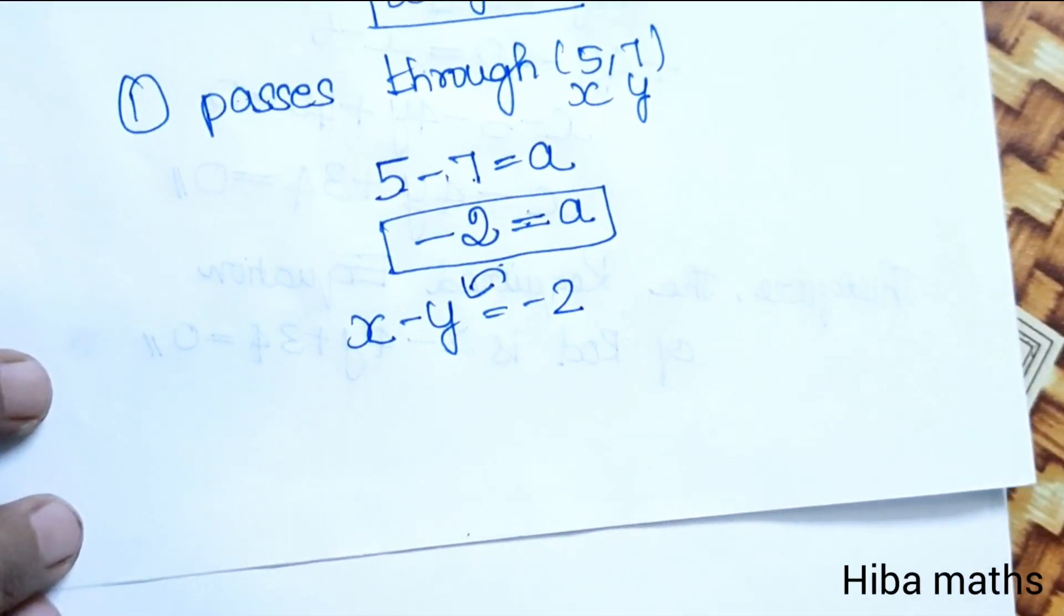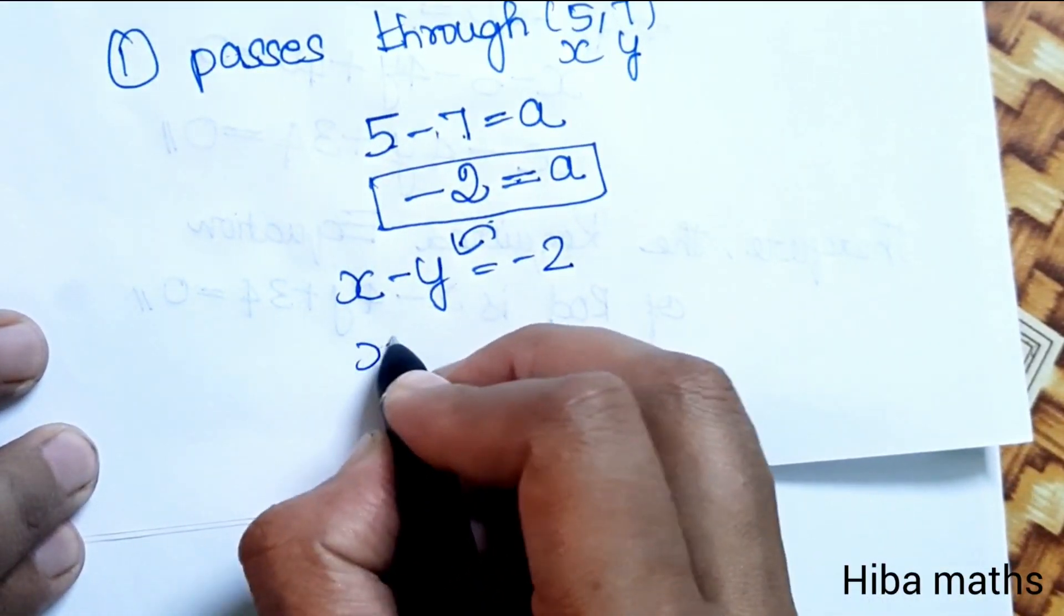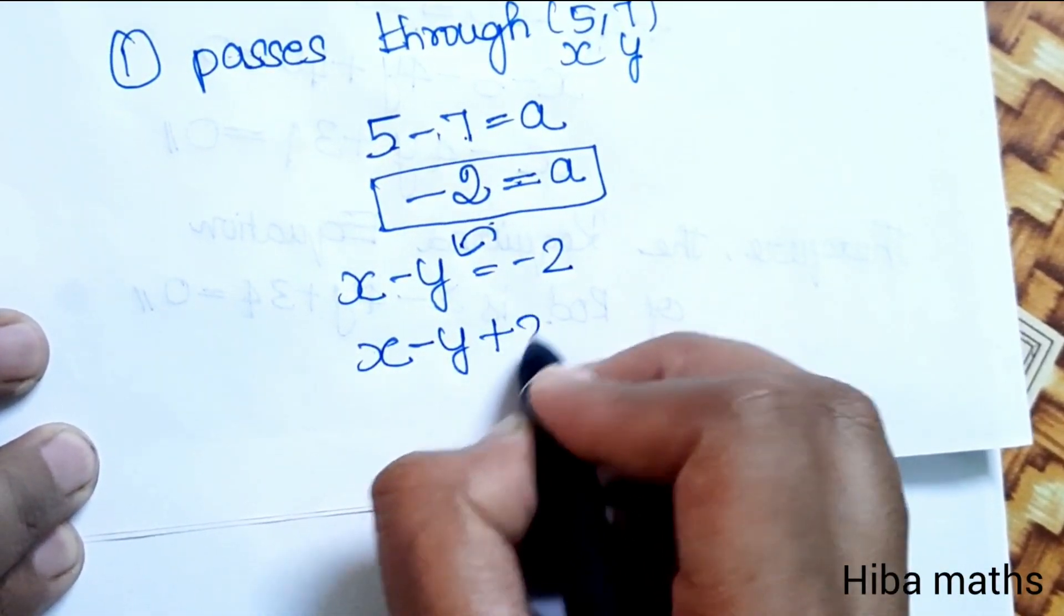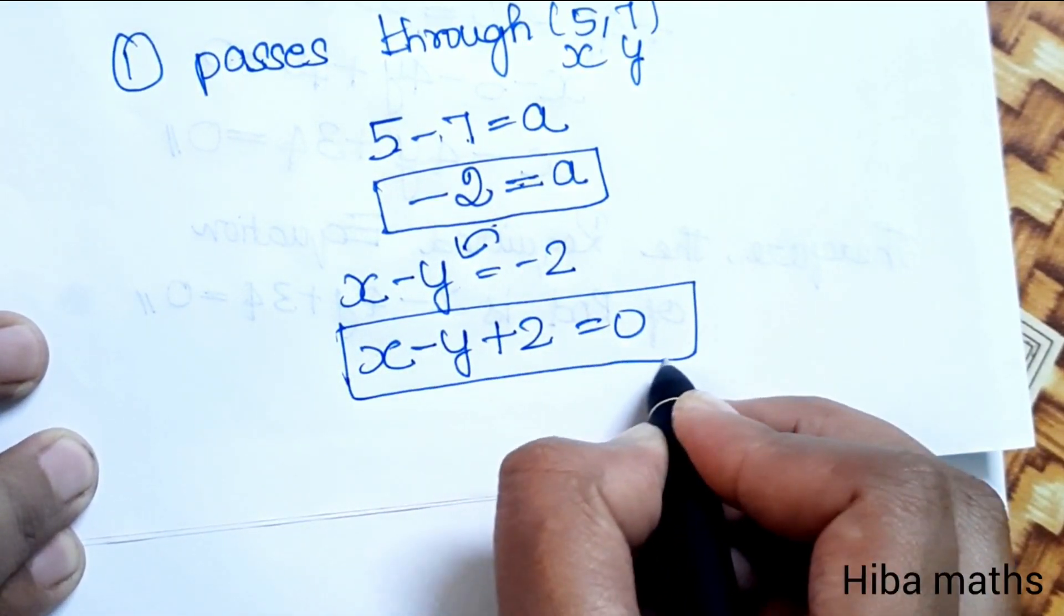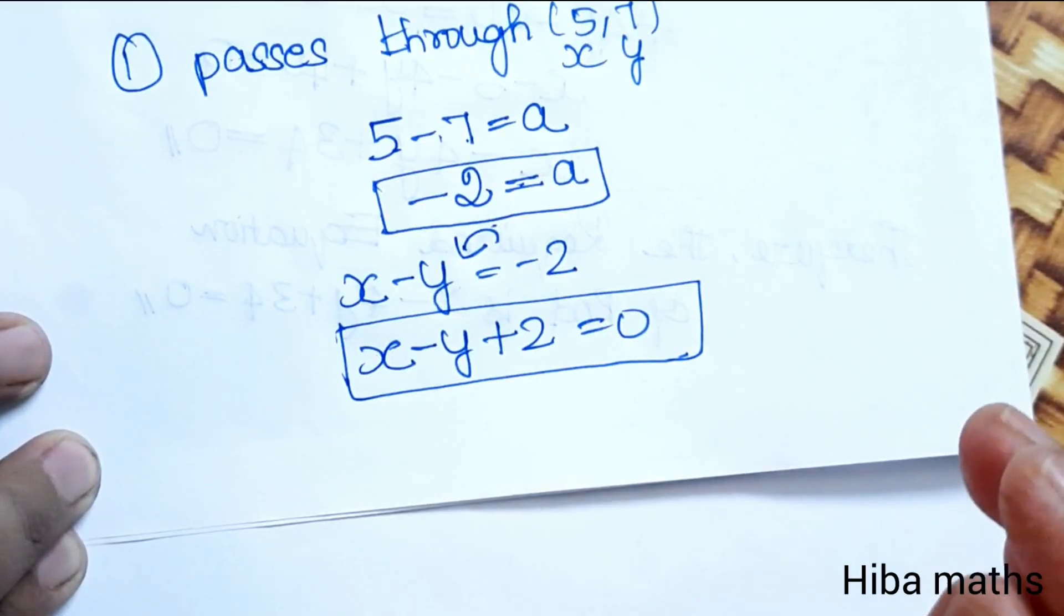Minus 2 is on this side, so we move it to get all terms on one side. X minus y plus 2 equal to 0. This is our required equation. Easy! You can try it. Thank you so much for watching.